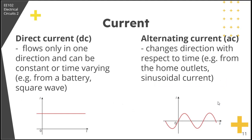There are two common types of electric current: the direct current (DC) and the alternating current (AC). Current can always flow in the same direction without reversing — in which case we have direct current, which can be constant or time-varying. If the current flows in both directions, reversing its direction, then we have alternating current.